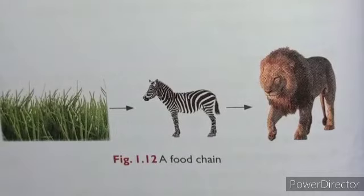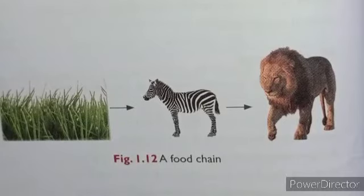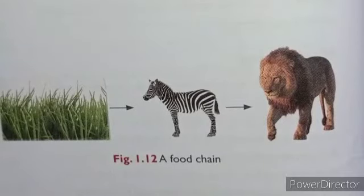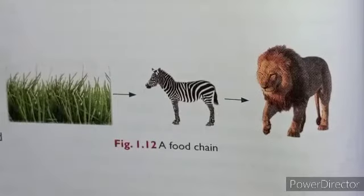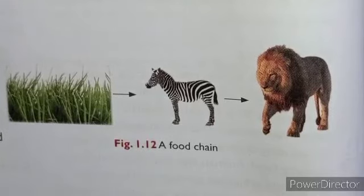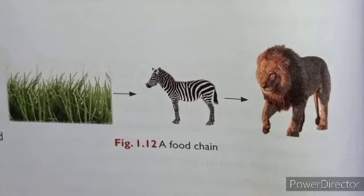The food chain is a linear sequence of organisms where nutrients and energy are transferred from one organism to another. This food chain begins with producers, and all herbivore animals depend on green plants for food and are called consumers.